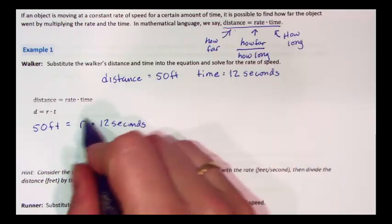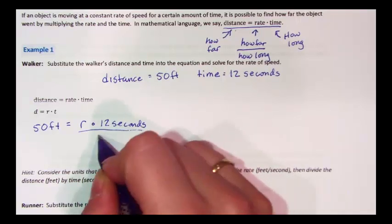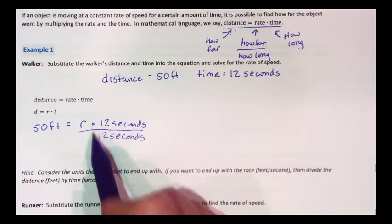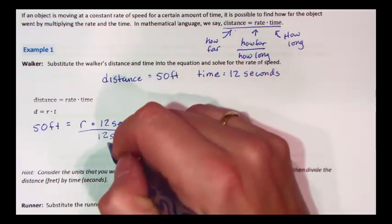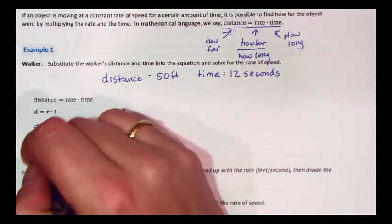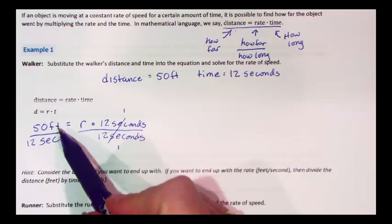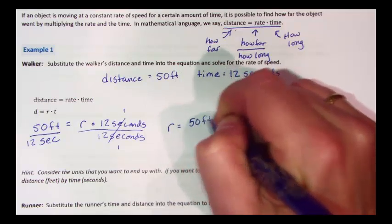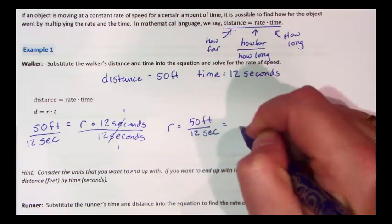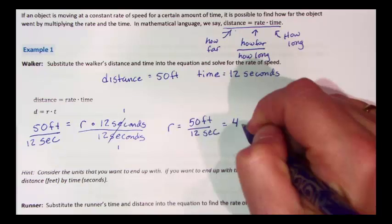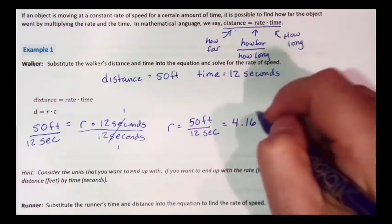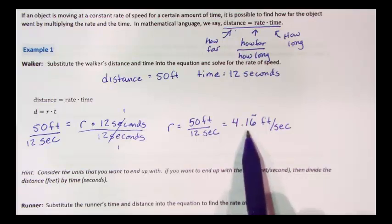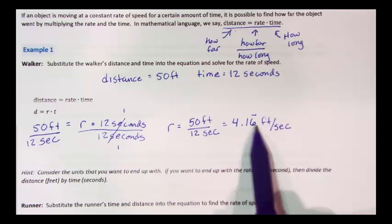The distance is 50 feet. We don't know our rate, that's our variable. And our time is 12 seconds. We want to know how fast in feet per second that our walker went. So in order to find R, our rate, we're going to divide both sides by 12 seconds. Dividing is the inverse of multiplying. When we divide 12 seconds by 12 seconds, they cancel out to be 1. And if we do 12 seconds on this side, we end up with our rate units being feet per second. So R is going to be 50 feet divided by 12 seconds, which is 4.16 feet per second. That means in 1 second, this person can walk 4 and a little bit feet, just a little bit more than 4 feet.